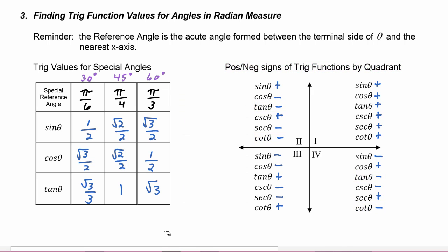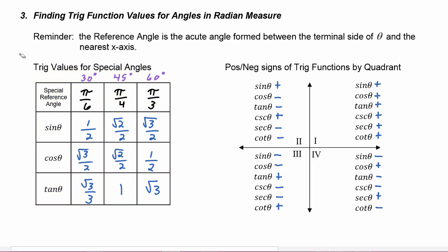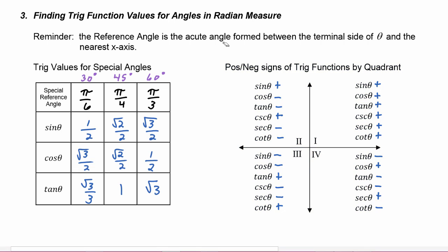So this will be our toolkit for finding trig function values for angles in radian measure. We need to use reference angles, the chart for the trig values of special angles, and the chart for the positive and negative signs of the trig functions by quadrant. Let's get started.